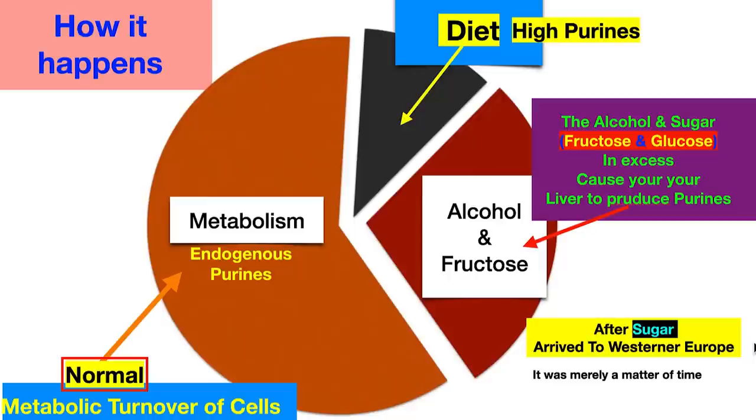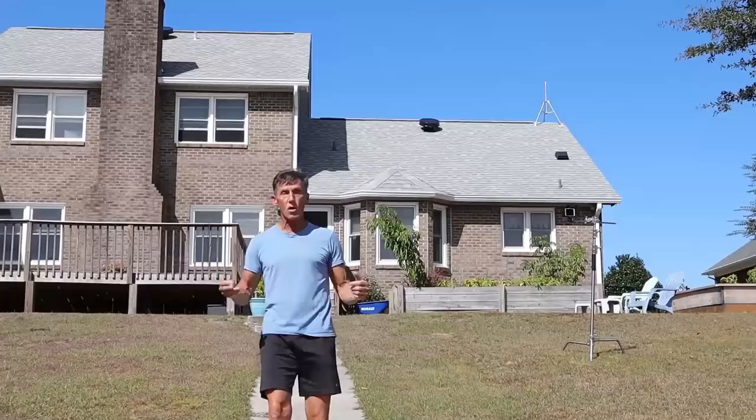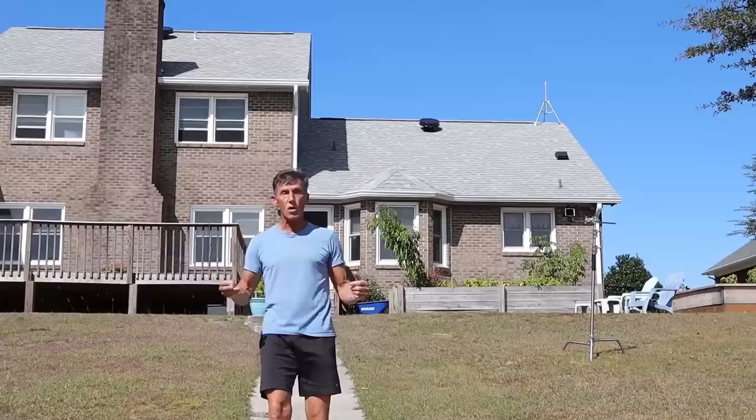So how it happened: we started with a diet high in purines. Then we had alcohol and sugar — fructose and glucose in excess — which cause the liver to produce more purines. After sugar arrived in Western Europe, it was just a matter of time for more and more people to have more sugar and more alcohol, so the incidence of gout was going to start going up. We dealt with alcohol for nearly 8,000 years, and then along came sugar — sucrose, fructose, and glucose — and that blew it up completely.